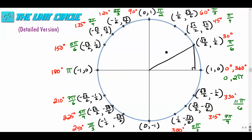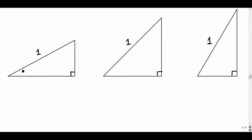The unit circle has a radius of 1, so each of these lengths is 1. If we use a 30 degree angle, a special right triangle is formed — specifically a 30-60-90. We have three reference triangles: one 30-60-90, one 45-45-90, and another 30-60-90 in a different orientation. The hypotenuse in every case is 1, which is the radius of the unit circle.